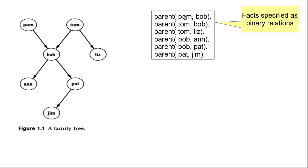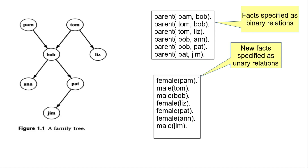These are the different facts we used, and we represented these facts as binary relationships because we have two arguments in every relationship. Now let's say we also want to represent the gender of each person. We have already included the parent relation, and now we want to add the gender information. One way to include this information is as facts — we can specify new facts to capture the gender information, such as Pam is female, Tom is male, and so on.